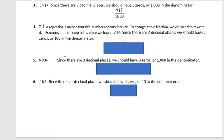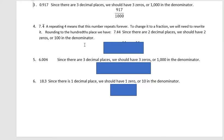All right, number four, seven point four four four four four four. That's what a repeating bar over that number means. It repeats forever. To change it to a fraction, we need to rewrite it. Rounding to the hundredths place, we have 7.44.